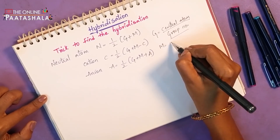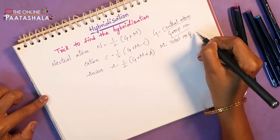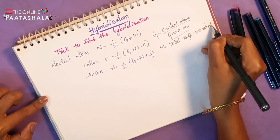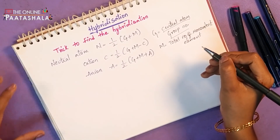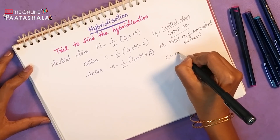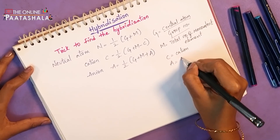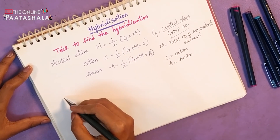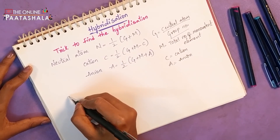M is the total number of monovalent elements. C is for cations — how many cations are present. A is for anions. By using these formulas, we will now see a few examples of how to calculate the hybridization.